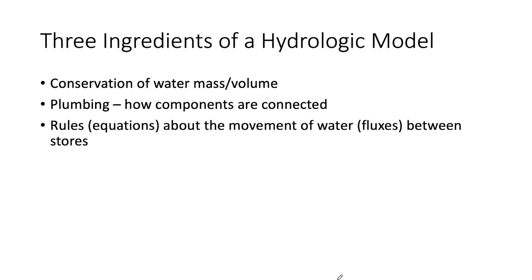We need to make decisions and create some logic for how the components of our watershed are plumbed together. The final ingredient is rules — equations specifying how the water moves through that plumbing. We need to create these either from physical principles and physical laws of how water moves under energy gradients, or from conceptual rules that represent the movement of water from one part of our watershed to another.